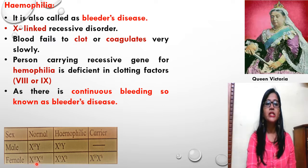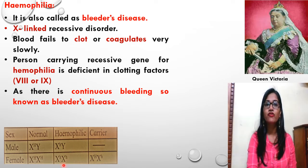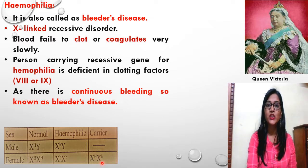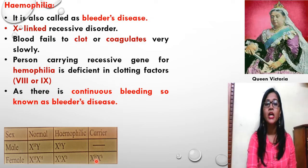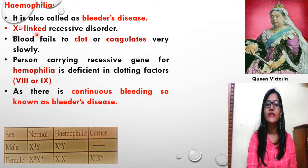In case of females: if normal, both X chromosomes carry capital H — both dominant genes. If Haemophilic, both X chromosomes carry small h. If the female is a carrier, one X chromosome has the dominant gene (capital H) and the other carries the recessive gene (small h). Such females are carriers. Queen Victoria was a carrier with this X-linked recessive disorder, and she passed it to her children.